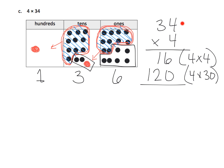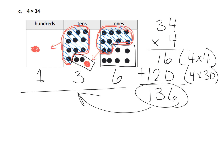Now let's go back to our partial products method. We add the ones together: 6 ones plus 0 ones gives us 6 ones. We have 1 ten plus 2 tens, giving us 3 tens. And no hundreds plus 100 equals 100. We end up with 136 in both methods. This partial products method is not the American standard algorithm, but it's a wonderful technique that connects the place value chart to a more abstract, easy-to-use approach.